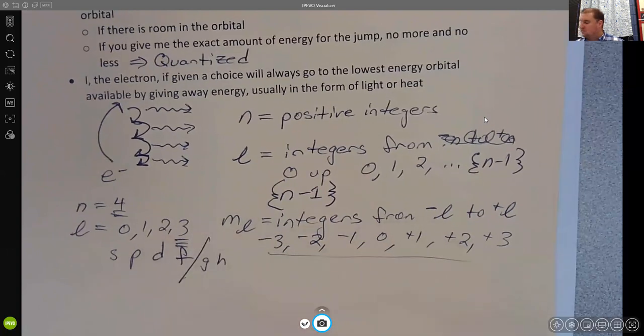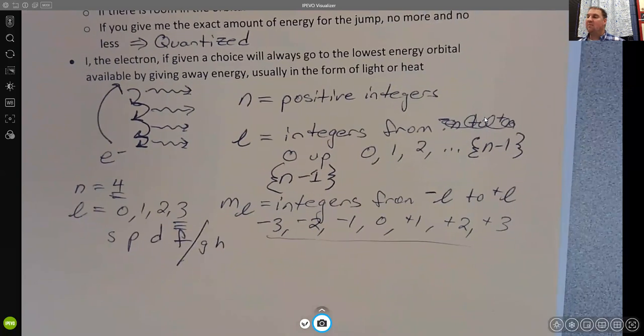The highest we see for ground states of atoms on the periodic table is the f. So come back for the next video to get some stronger connections between this and the periodic table.